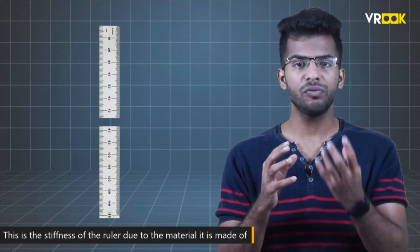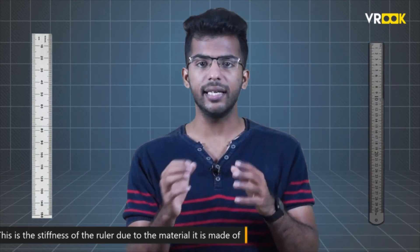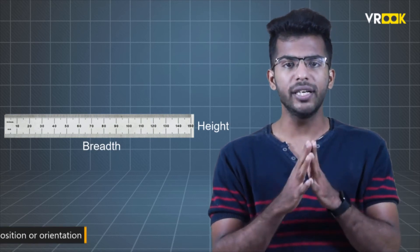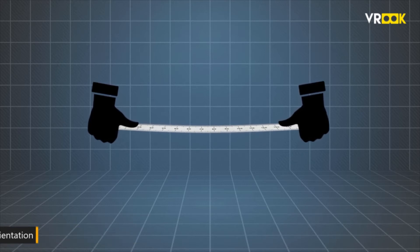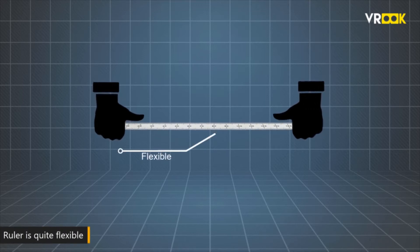This is the stiffness of the ruler due to the material it is made of. If it is made of steel, then the elastic modulus would be a bit higher and the force required to deform it will be more. Now, there is also a stiffness of the object due to its shape. This ruler has some breadth b and height h. If you hold it in a horizontal position or orientation, you can bend it easily. My fingers are like simple supports, so the ruler is quite flexible. If I bend more, it will break at some point.